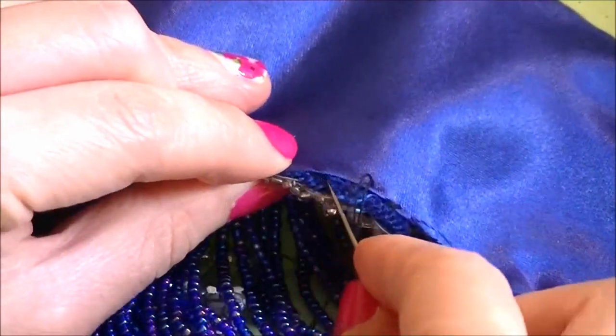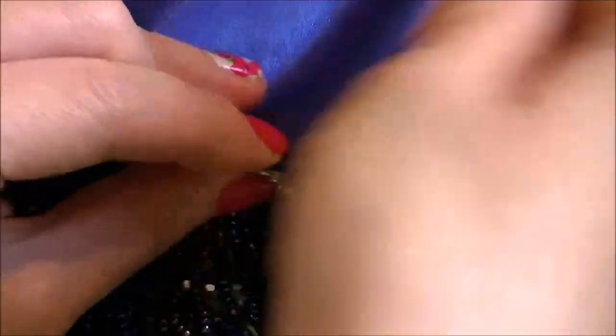Then just do quick stitches at corners so they don't move and stitch the lining back on in a spiral fashion.